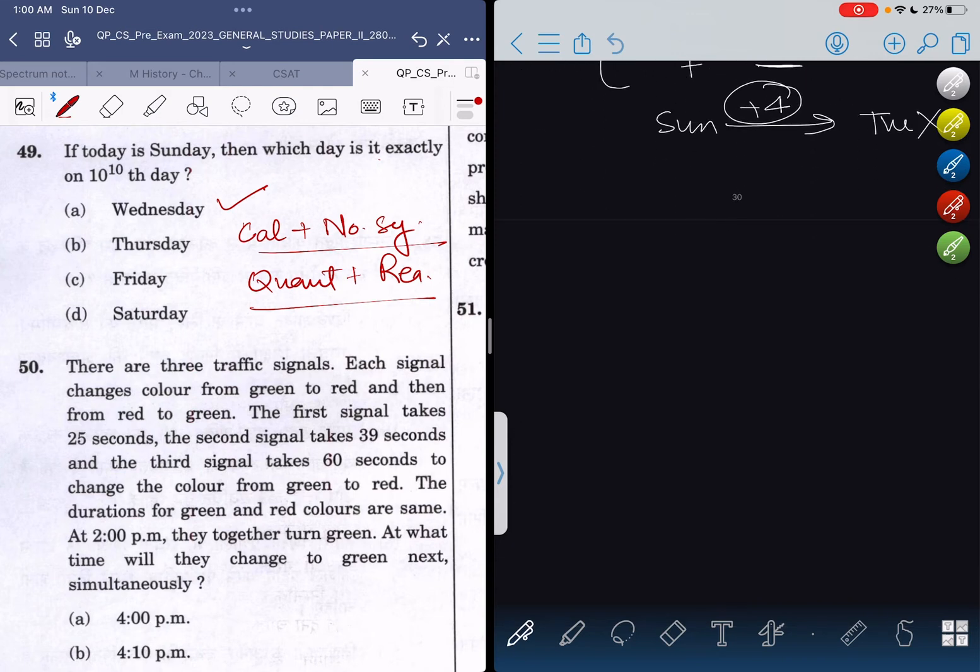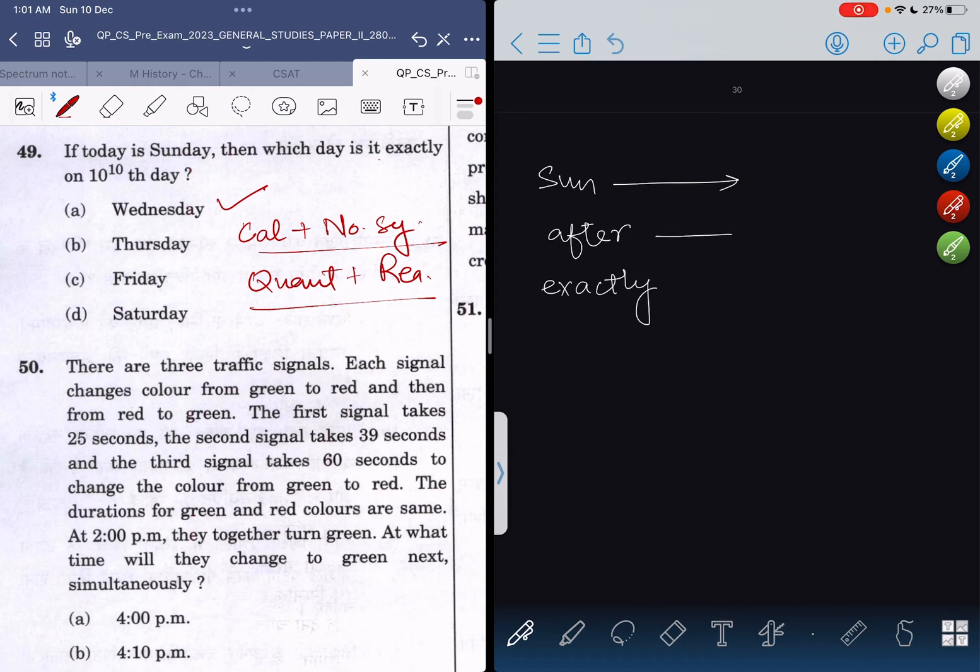The basic logic is that the quant part is over, and the reasoning part comes into the picture. If I ask you, today is Sunday, what day will be after two days? Note that 'after' and 'exactly' are the keywords here. After two days, it will be Tuesday obviously.